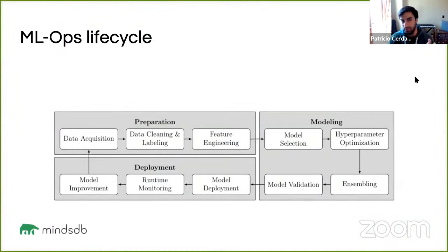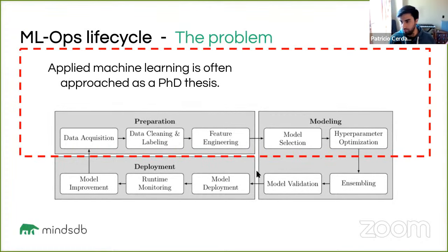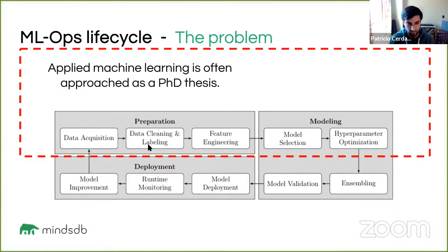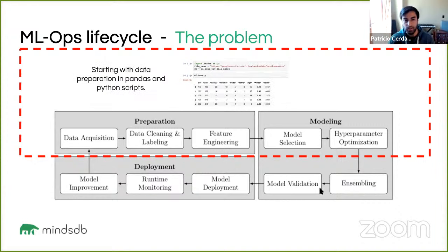The ingredients are based on how we envision the lifecycle of a typical machine learning project. MLOps is a term many in the community are aware of — we're all figuring out the optimal way to deploy models. A key issue we identified right away is that a lot of applied ML projects are approached like PhD theses, focused heavily on data preparation and modeling, with the transition to a robust software solution being unpredictably expensive.